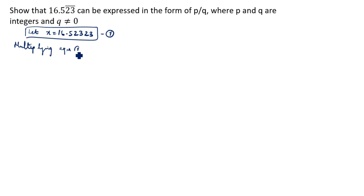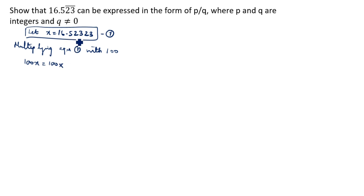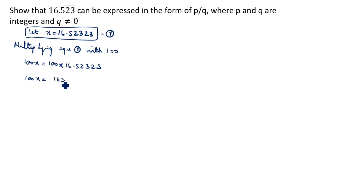Multiplying equation 1 by 100 — since two digits are given under the bar, we use two zeros. So 100x is equal to 100 into 16.52323, which gives 1652.323... This is the second equation.